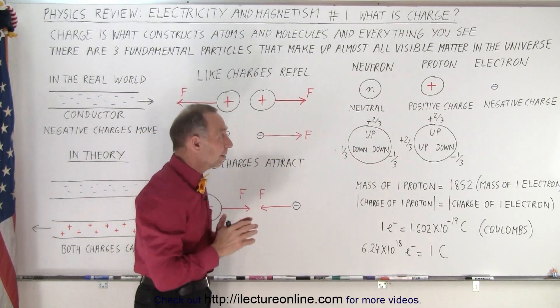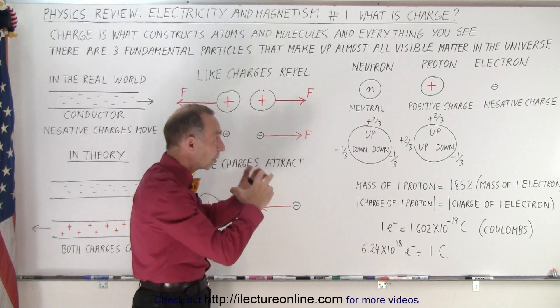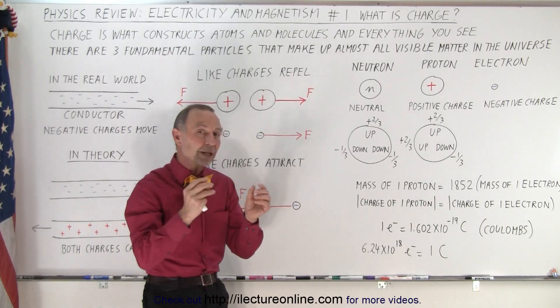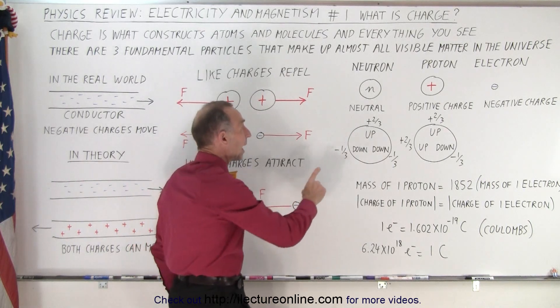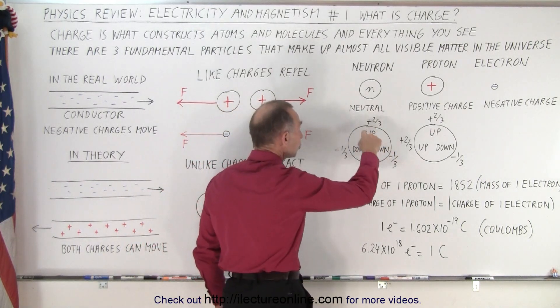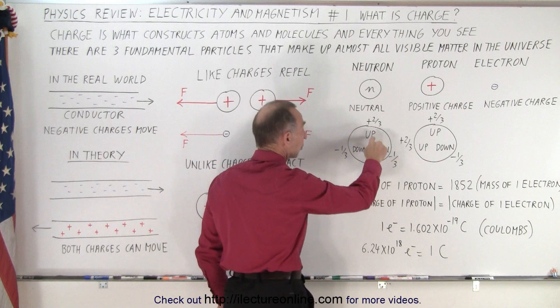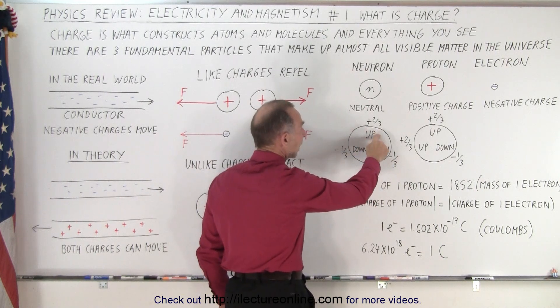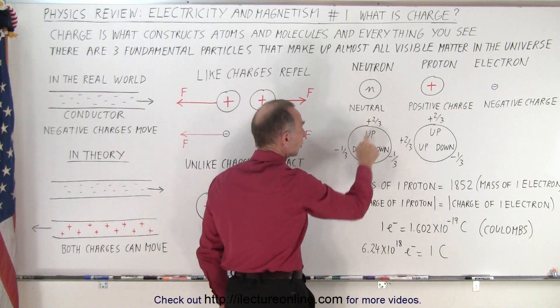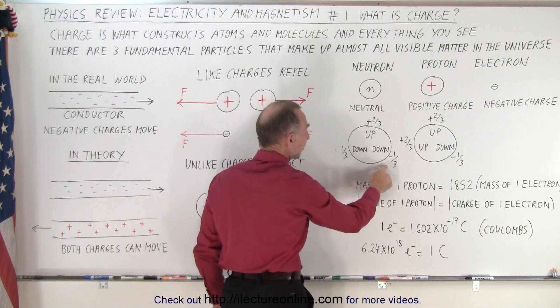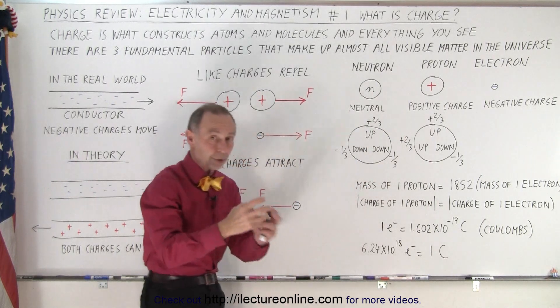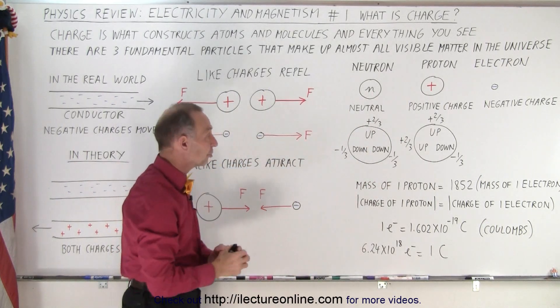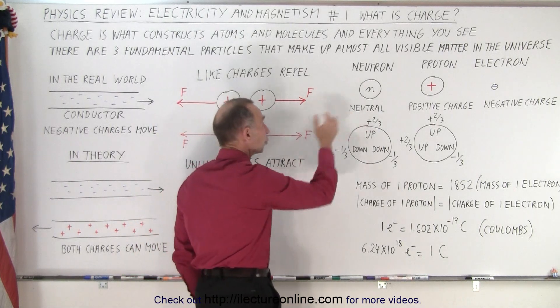Now interestingly enough, the neutron and the proton are large particles that themselves are made up of even smaller particles called quarks. And the neutral particle neutron has two down quarks and one up quark, where the up quark has a positive charge of two-thirds, and the down quarks each have a negative charge of one-third. That is zero net charge, and that's why neutrons are neutrally charged.